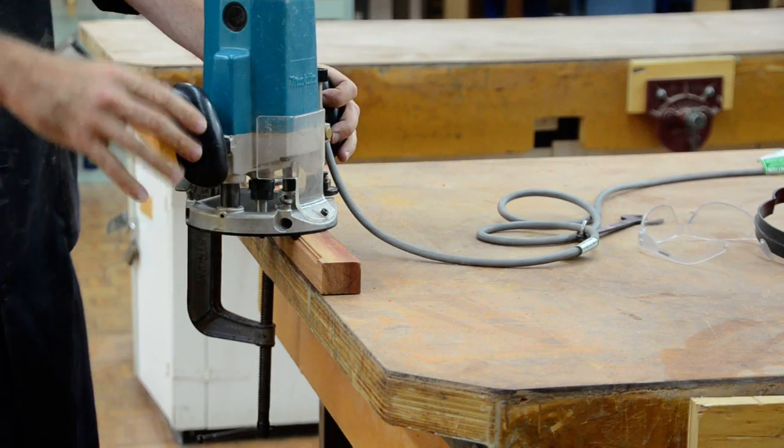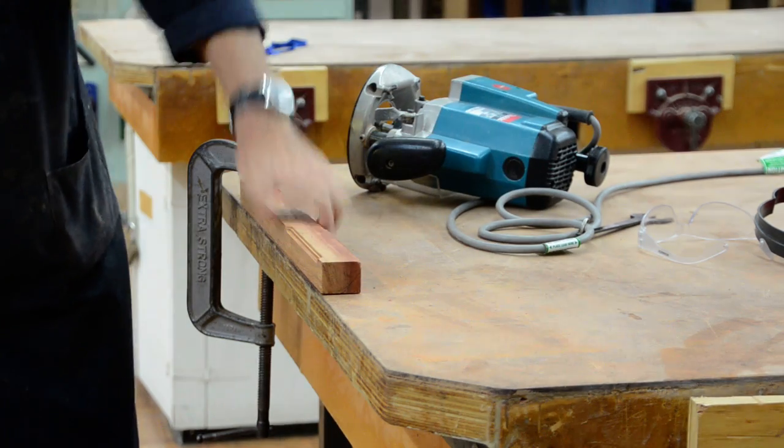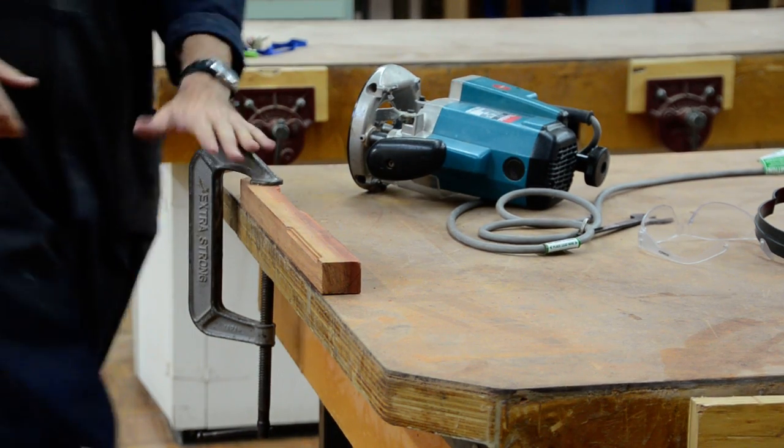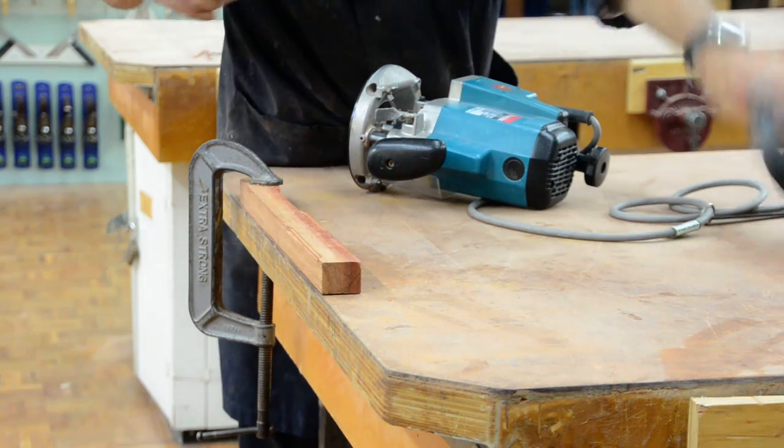So the cutter's in place nice and tight. Everything's locked in place. I have my material ready to go and it's been secured with the G-clamp. Next thing I'll need: personal protection equipment, glasses and always earmuffs.